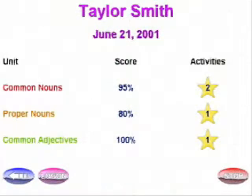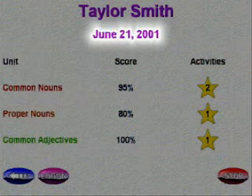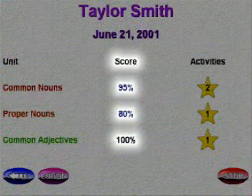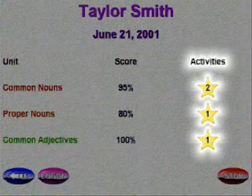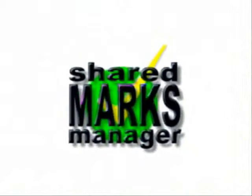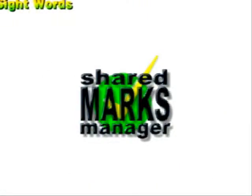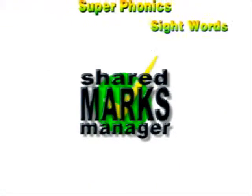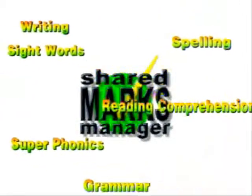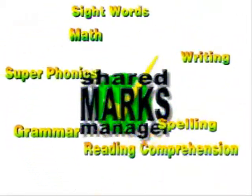When each student exits a program, he or she is shown a summary of the activities completed on that day and the average score for each activity completed. The number within the star represents the number of activities completed for that unit. In the Essential Skills Program folder, you will also find the Marks Manager, an evaluative tool that allows educators to track student progress across all programs.